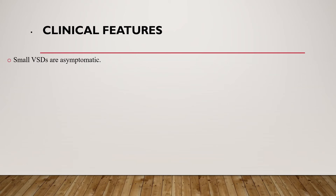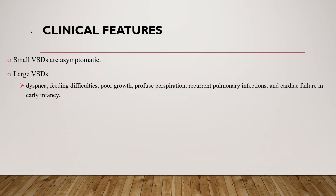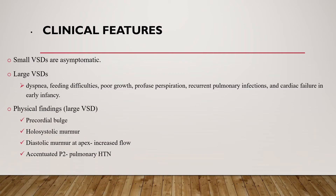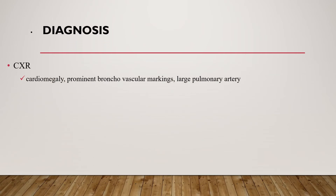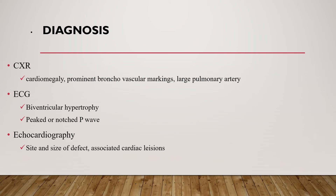Regarding clinical features of VSD: small VSDs are asymptomatic, while large VSDs can cause dyspnea, feeding difficulty, poor growth, profuse perspiration, recurrent pulmonary infection, and cardiac failure in early infancy. Physical findings include precordial bulge, holosystolic murmur, diastolic murmur at the apex due to increased flow, and accentuated P2 if pulmonary hypertension is present. To diagnose VSD, chest X-ray shows cardiomegaly and prominent bronchovascular markings and large pulmonary artery. On ECG, biventricular hypertrophy and peaked or notched P waves can be seen.